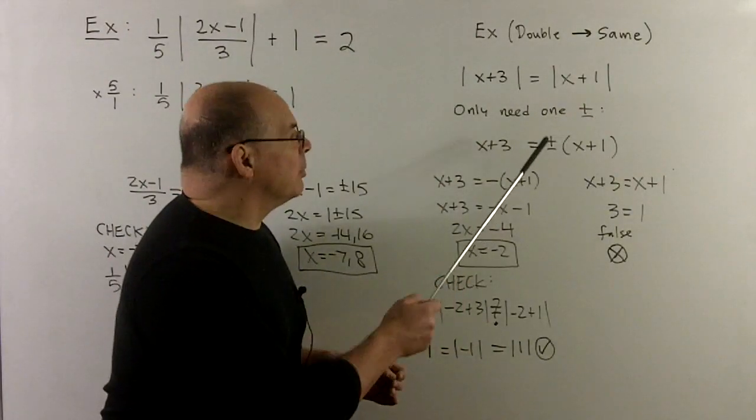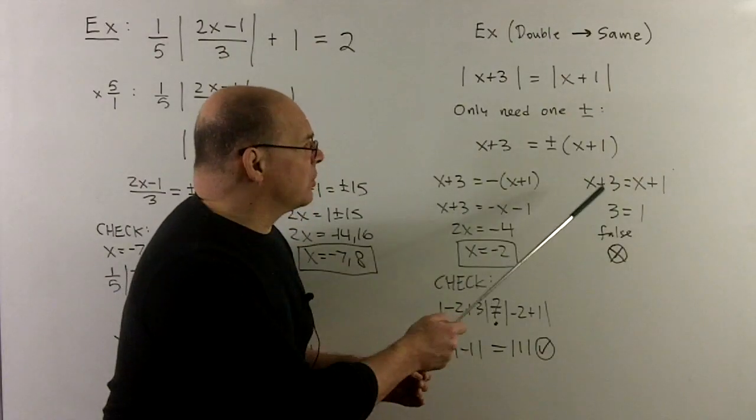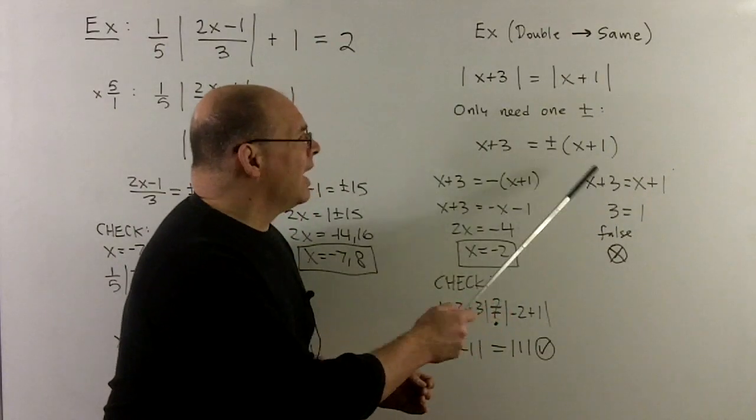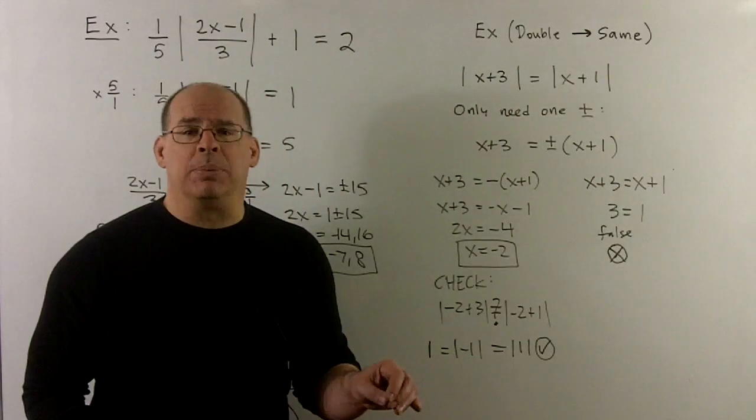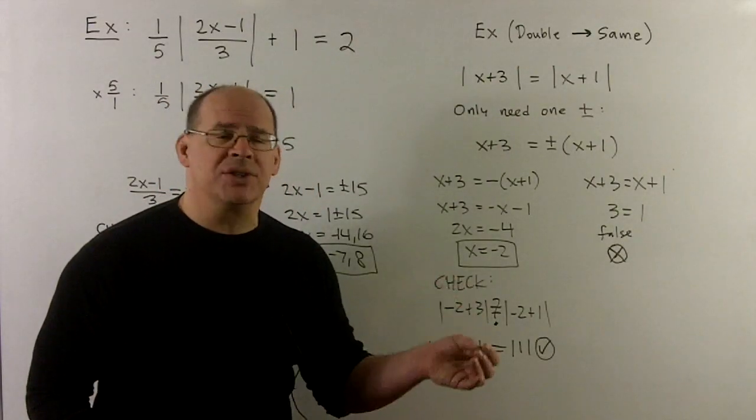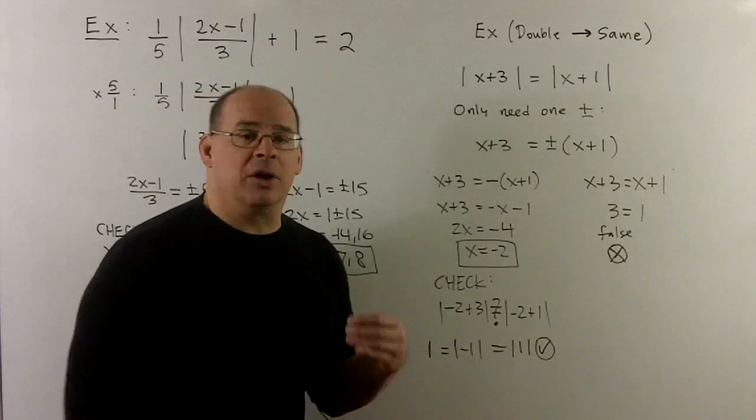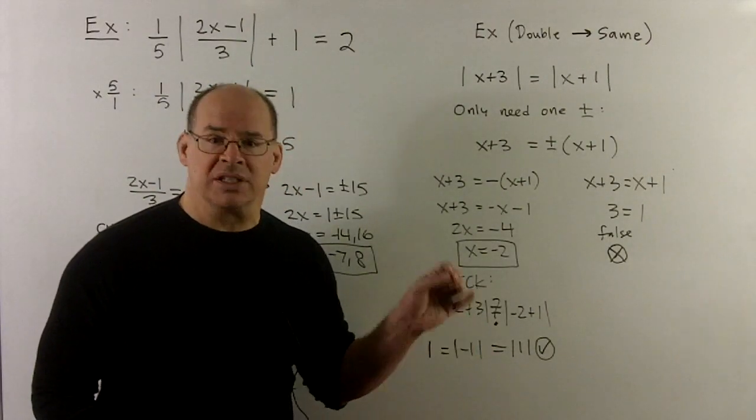For the other equation, the plus, we get x plus 3 equal to x plus 1. I cancel the x's and we get 3 equal to 1. Note, the x's have dropped out completely and what's left over is a false statement. So that's not going to produce anything useful. So we could just stop there.